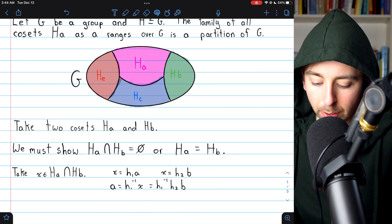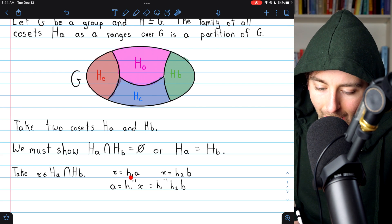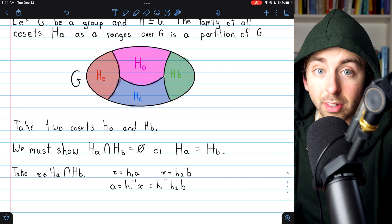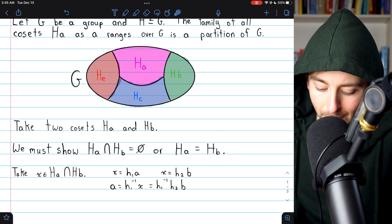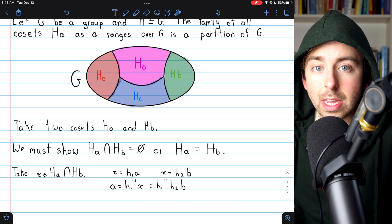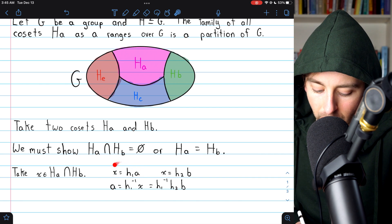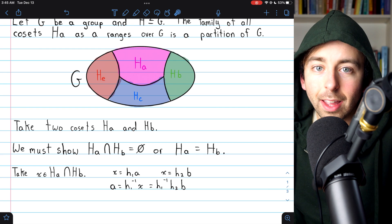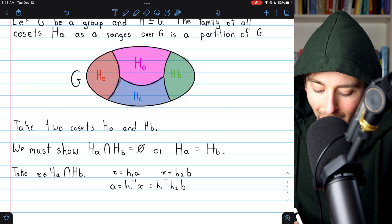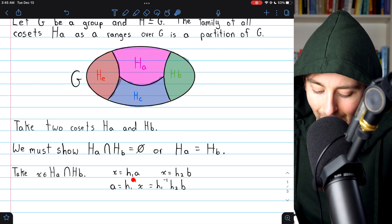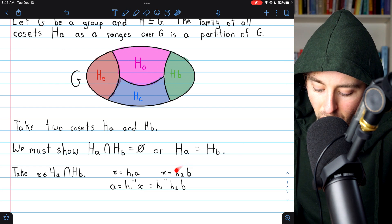Here's how it works. If X belongs to both of these cosets, then by definition, X equals H1A for some H1. And similarly, since X is in the coset Hb, X equals H2B for some element of H, H2. But then, taking this equation, X equals H1A, and solving for A, multiplying by H1 inverse on the left, we find that A is equal to H1 inverse times X. But X is equal to H2 times B.